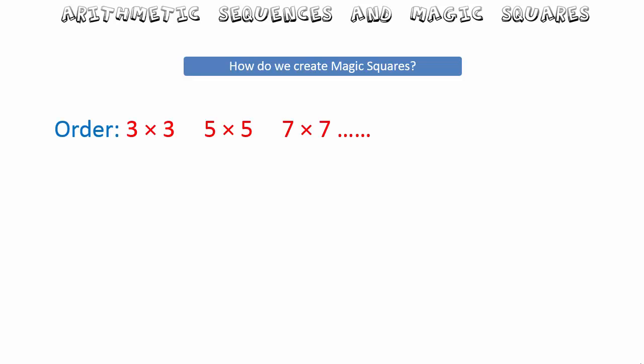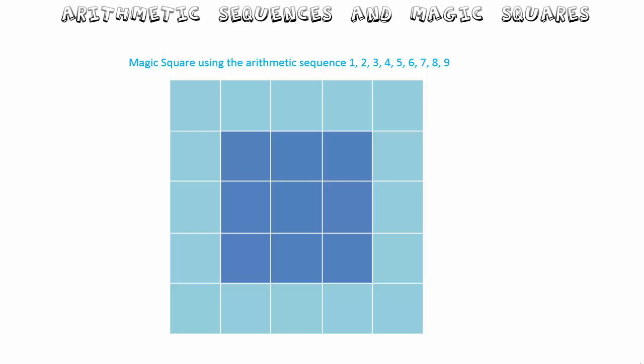Let's see how we can create our own magic squares. I will first show you how to create magic squares of odd order — three by three, five by five, seven by seven, and so on — and then how to create magic squares of order that is a multiple of four, such as four by four, eight by eight, twelve by twelve, and so on.